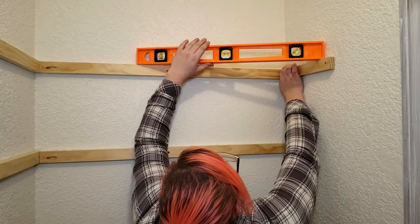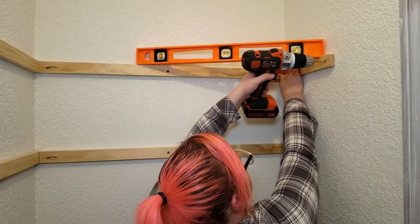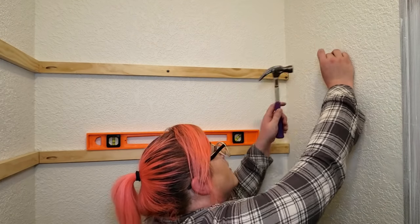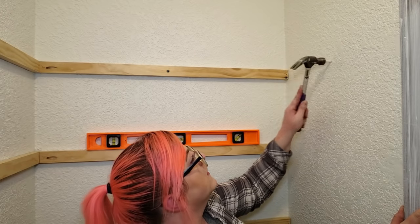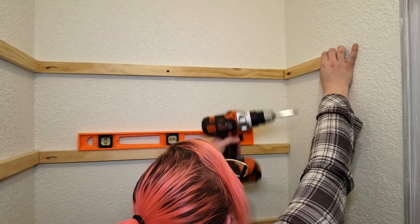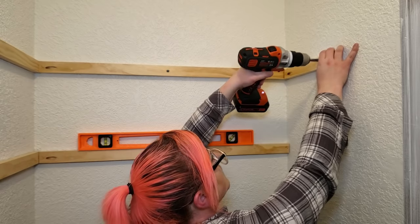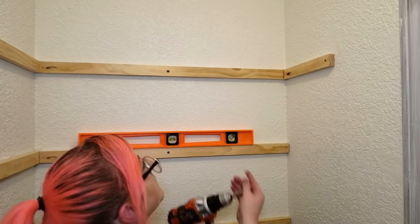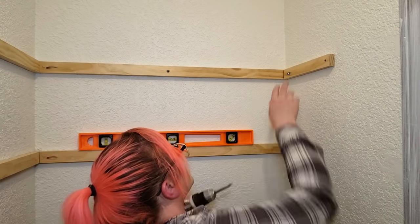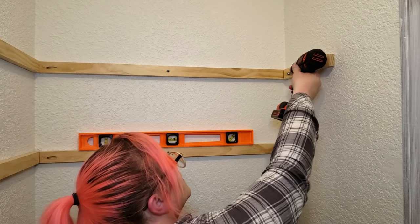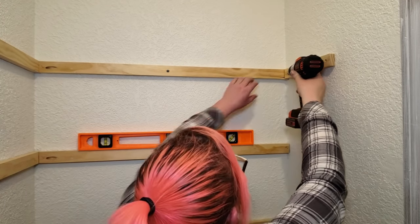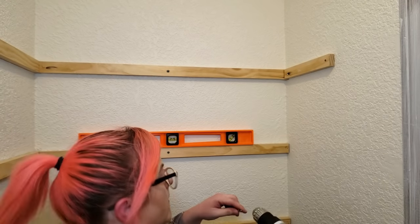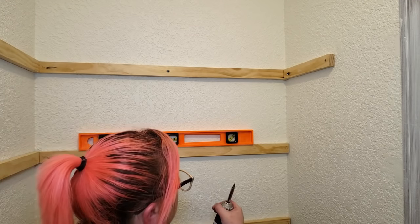I leveled these smaller cleats up with the ones next to them, and I drilled through the pilot hole into the drywall. I hammered a drywall anchor into the drywall and then attached the cleat to the anchor with a screw, then I used a pocket hole screw to attach it to the other cleat. I just followed this method and got all 10 of these side cleats installed the same way.